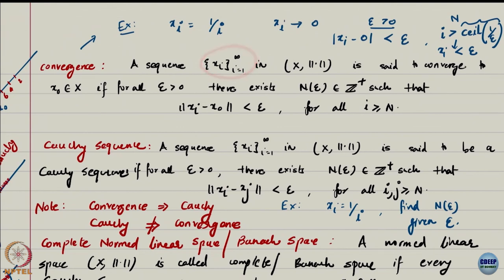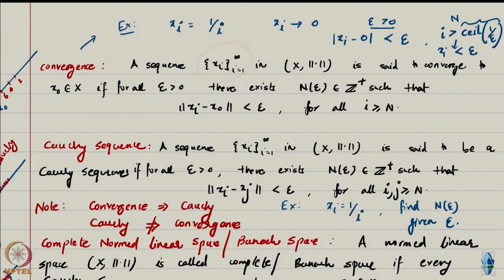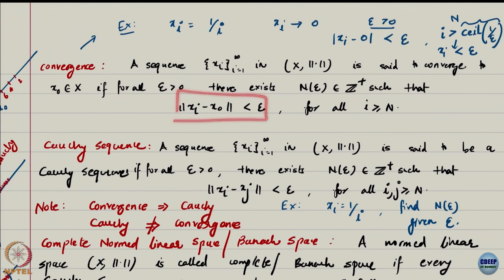A sequence {x_i}, i from 1 to infinity, in a normed linear space is said to converge to some point x_0 in that space, if for all epsilon positive, there exists a number N in the positive integers such that ||x_i - x_0|| is less than epsilon for all i greater than or equal to N. This is your first introduction in this course to epsilon-N type definitions.